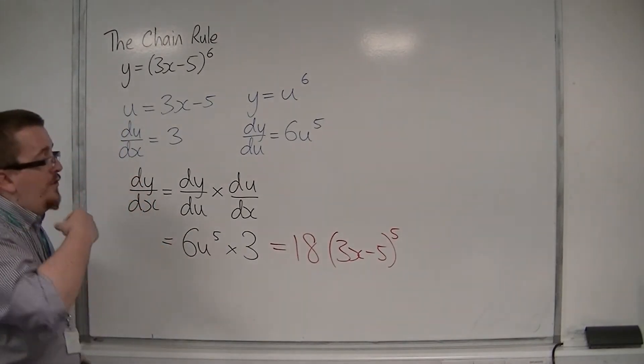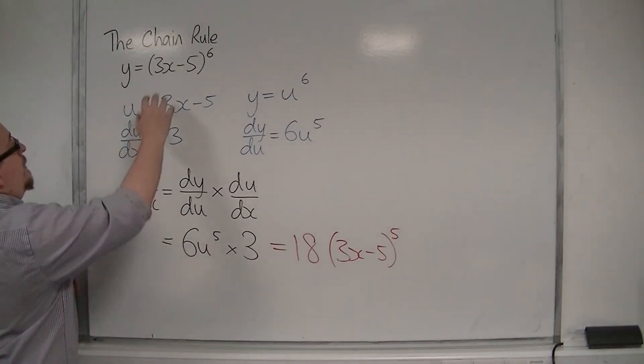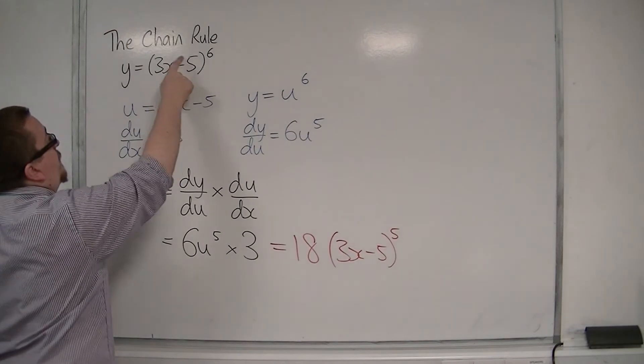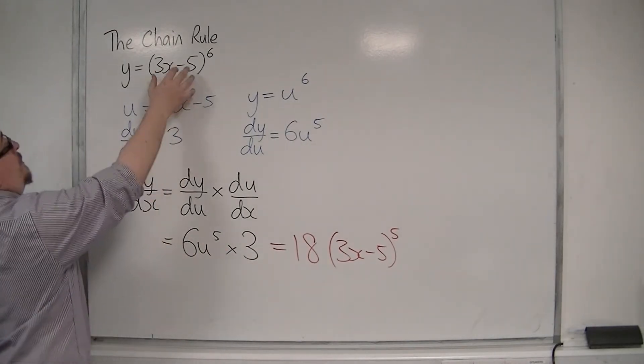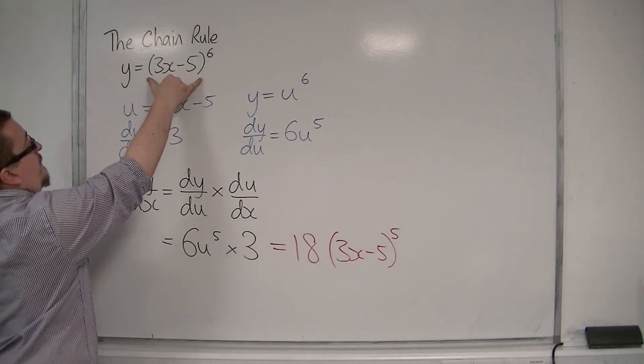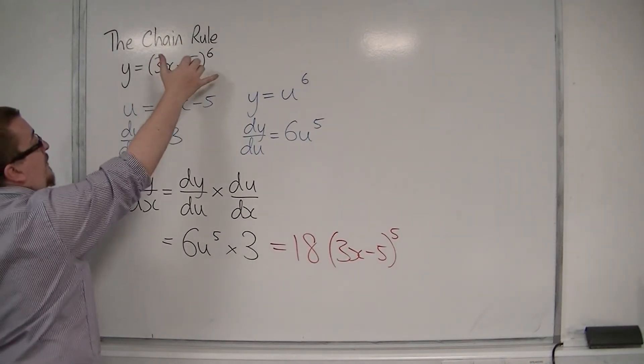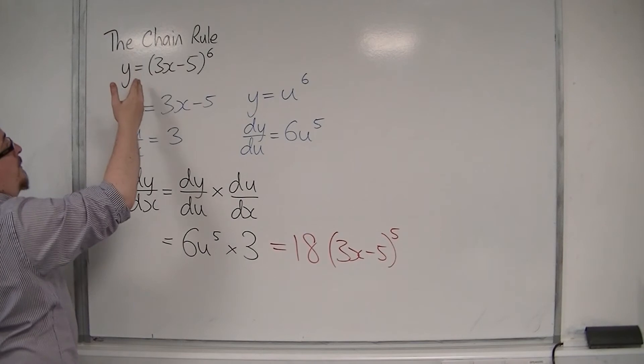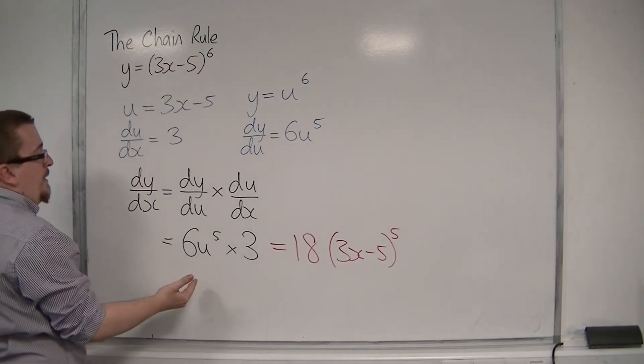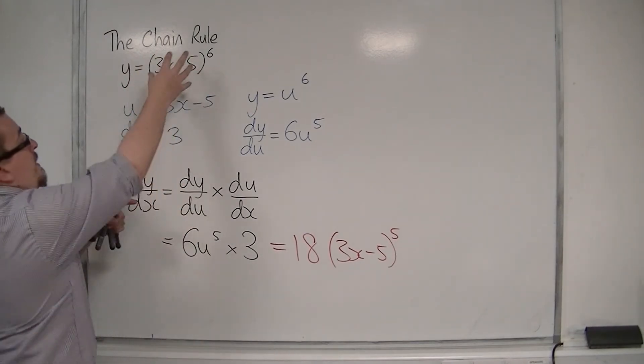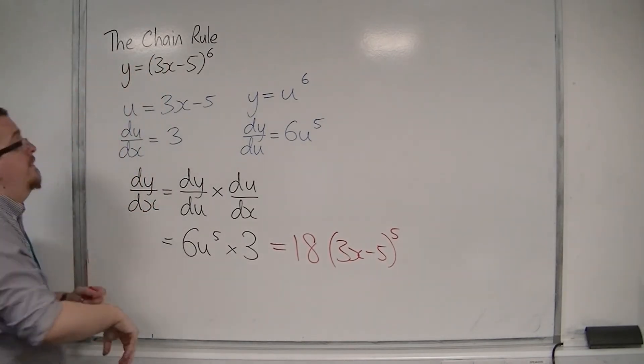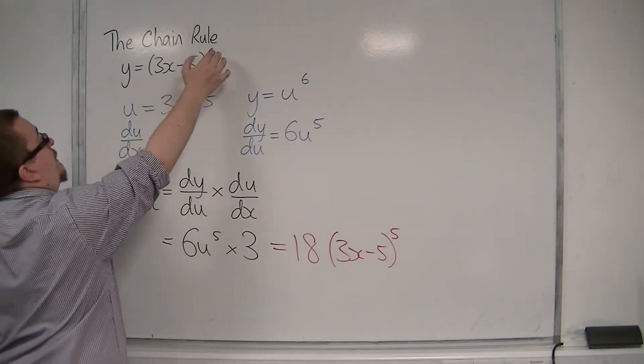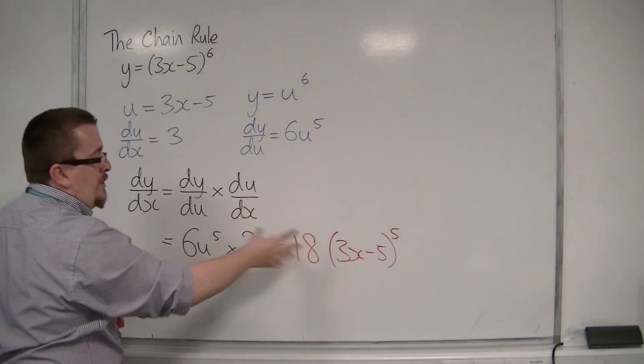So what I want you to start seeing is that the derivative of what's inside has come outside, so that's the 3. And you've differentiated this as if it's x to the power of 6. So 6 has come down to the front, you've taken 1 off the power. So the 3 from inside multiplies with the 6, makes the 18. And then you've got 3x minus 5, now to the power of 5, which is what we have there.